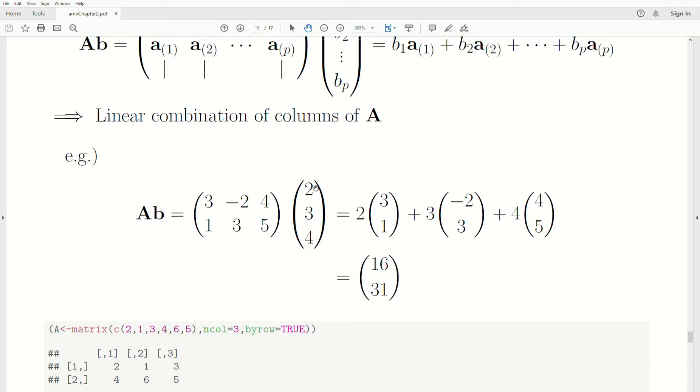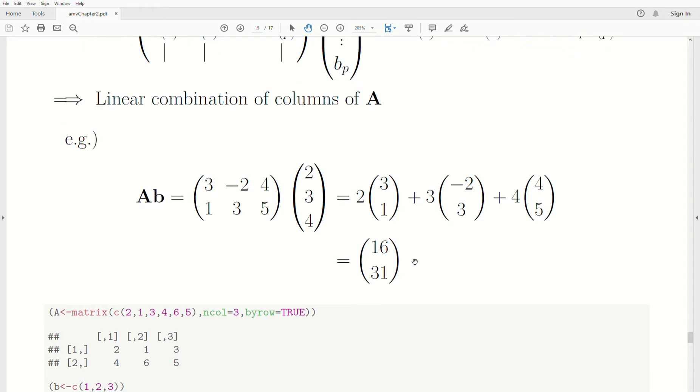But you can also think of it as 2 times this first column, 3 times the second column, 4 times the fourth. Now, these are all vectors, so it's a scalar times it, so you can multiply it in, multiply the 3 in, multiply the 4 in. Then what's left are 2 by 1 vectors. So they conform, so you can add them, and it adds to 16 and 31.